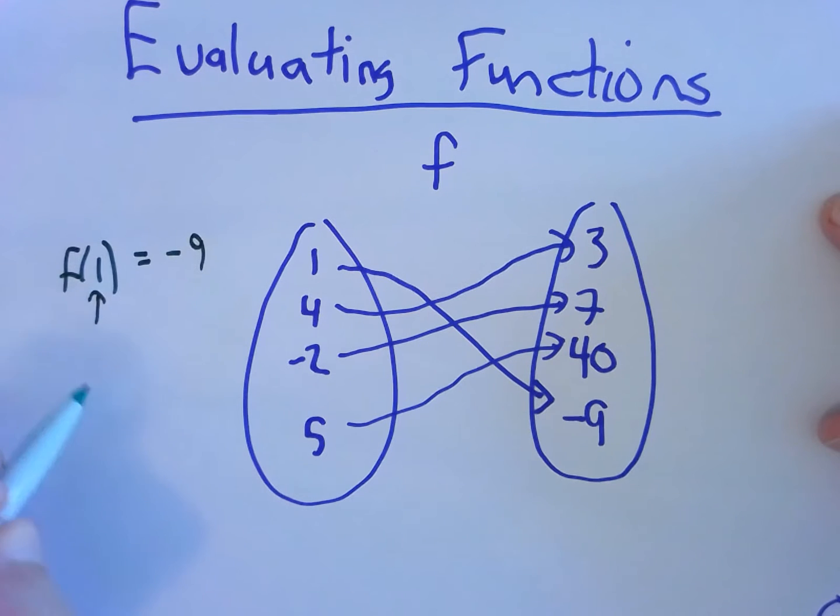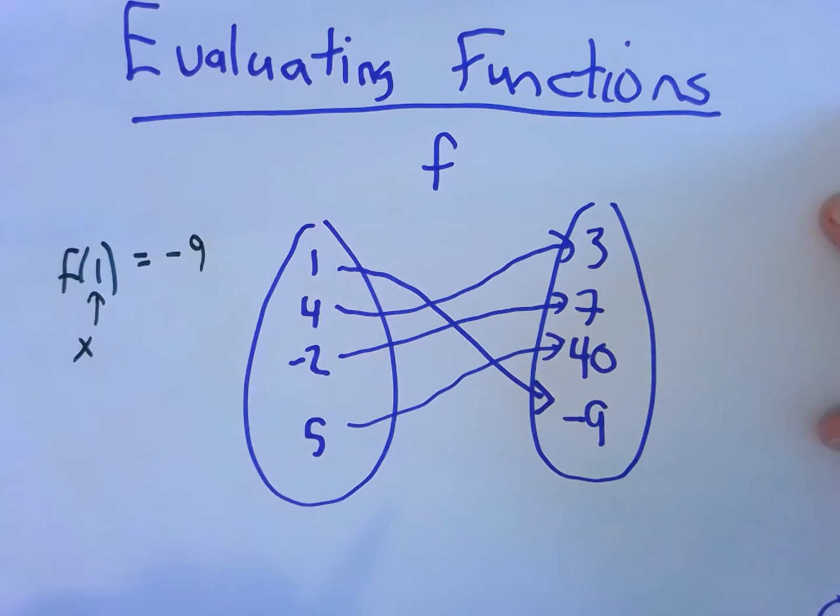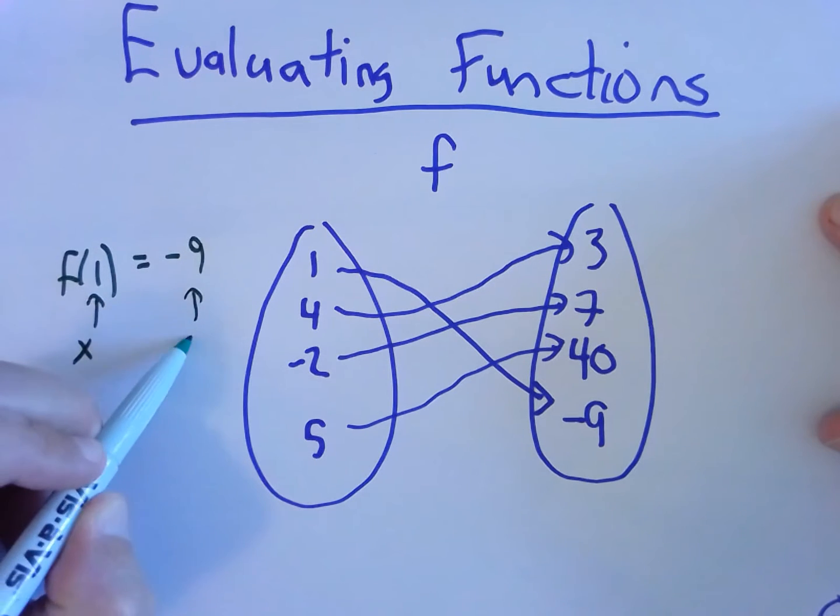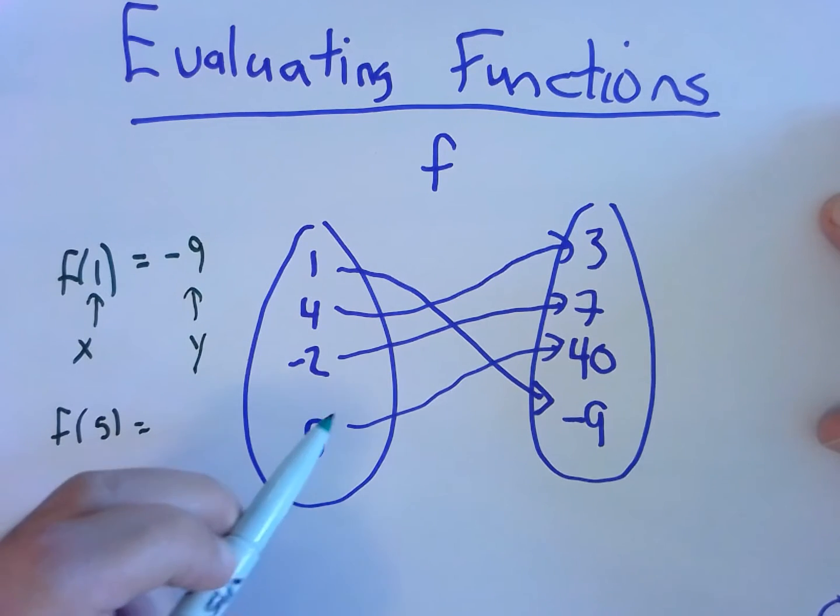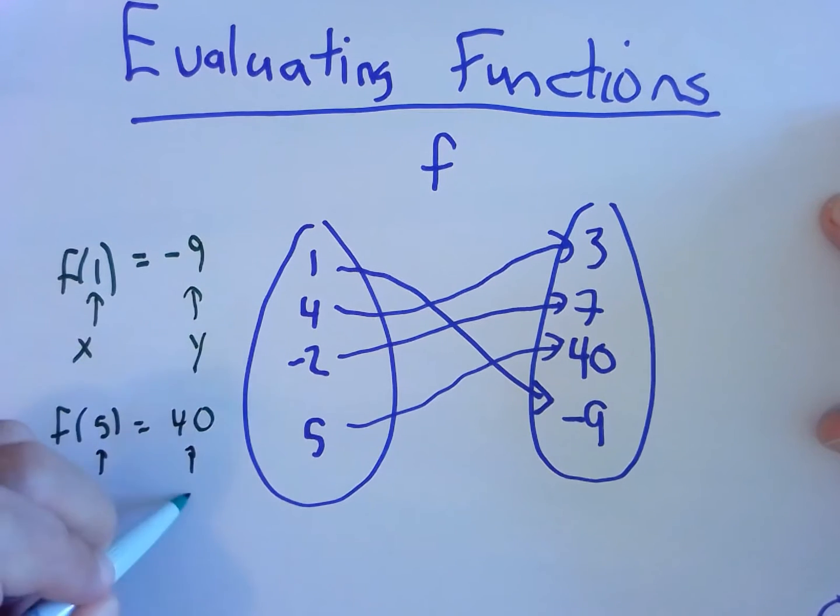1 here is an input, what we typically think of as an x. Negative 9 is a y, an output. Similarly, f of 5 means using your function named f, when the input is 5, find the output that goes with it, and so we just follow the line here. f of 5 is 40. Again, the inputs we typically think of as x's and the outputs are y's.